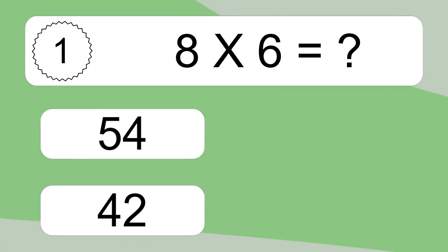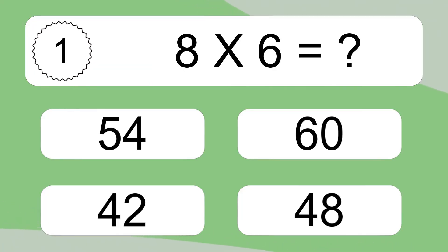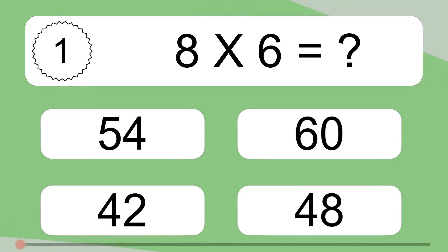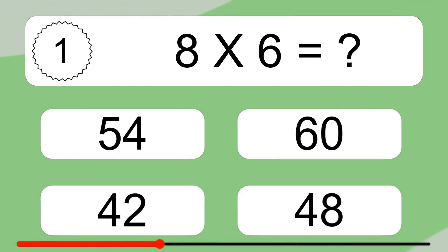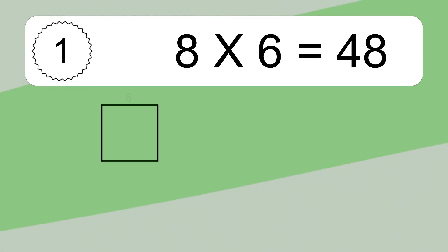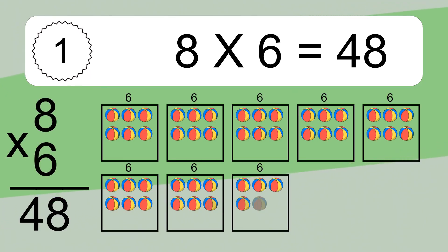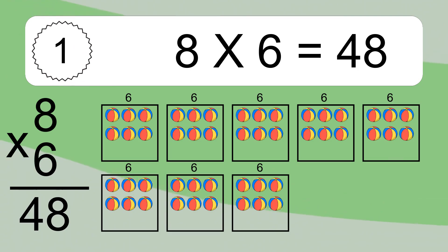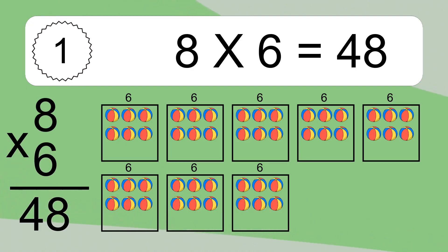8 times 6 equals what? 8 times 6 equals 48. We have 8 boxes, and each box has 6 colorful balls inside. If you count all the balls in all the boxes together, you will have 8 times 6 balls. This equals 48 balls.